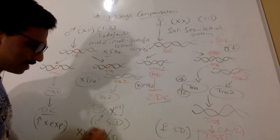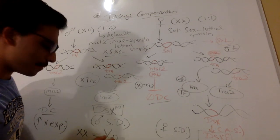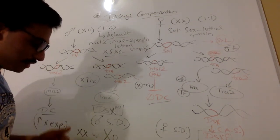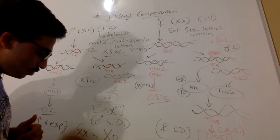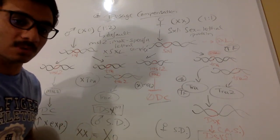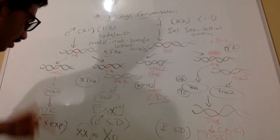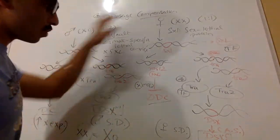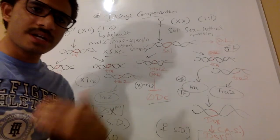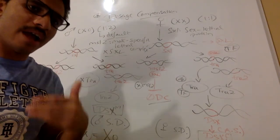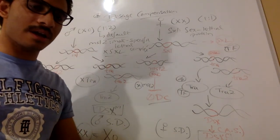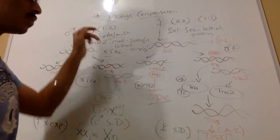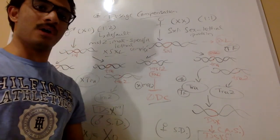The single X chromosome in males is shown enlarged to represent matching the total gene expression of the two female X chromosomes. That's how dosage compensation works in a broad overview. We will go into the detail of how the MSL2 complex works and how it induces dosage compensation on the X chromosome in males in the next video.